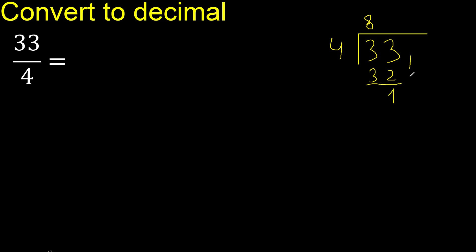There is no next digit, so we always complete with a 0 — bring down a 0. So now we have 10. 4 multiplied by which number?